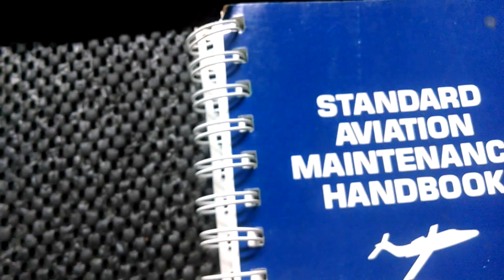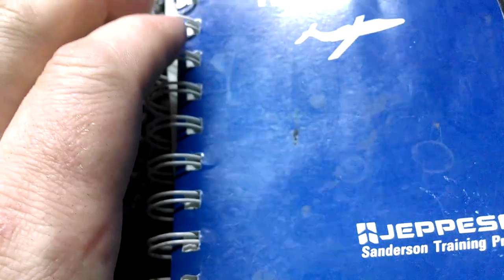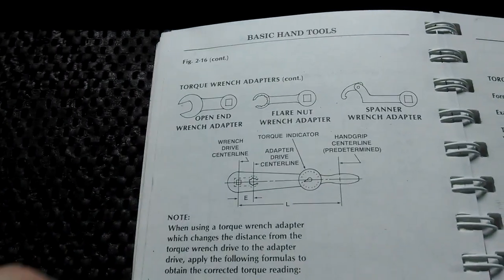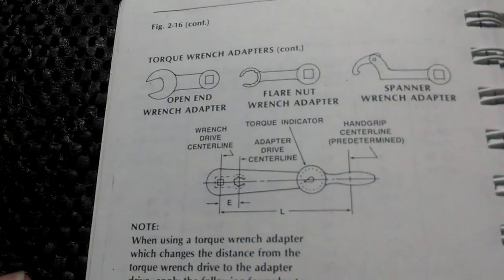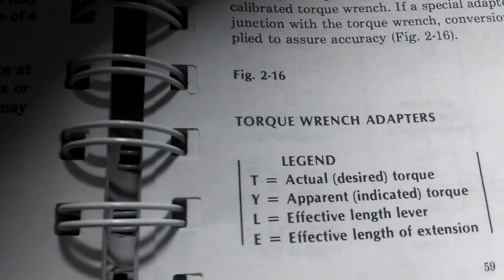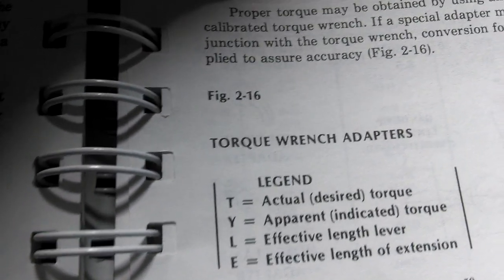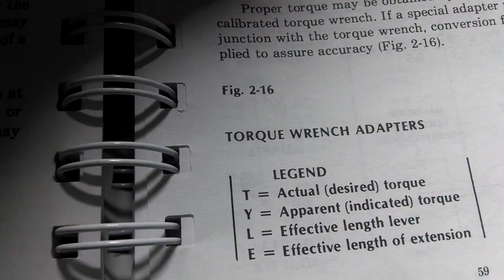Here is a Jepson Aviation Magnus Handbook. It's not FAA approved data but it will work in this situation. Anyway, there's the legend: T is actual torque, Y is the indicated torque.